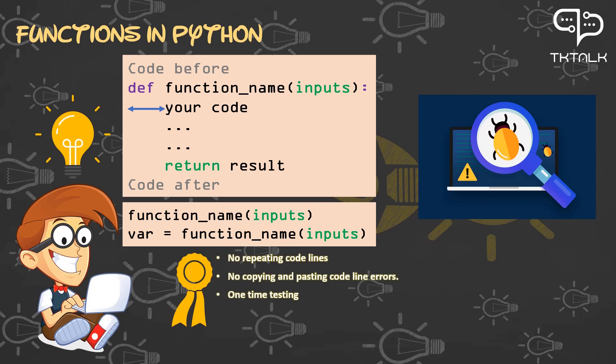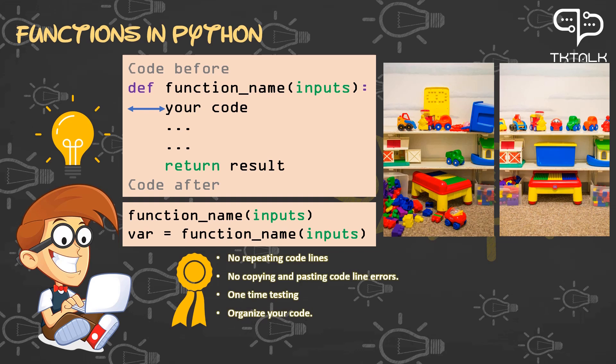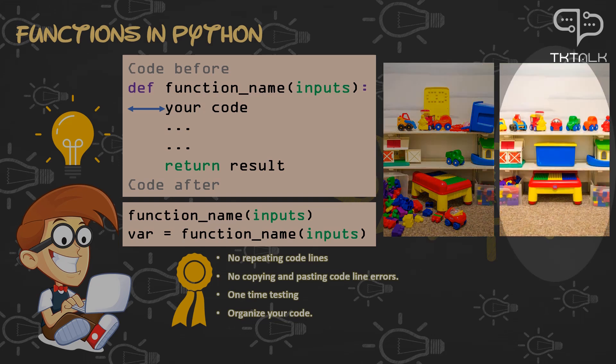Third, when you create a function and test it, you do not need to test it again every time you use it or call it. Fourth, organize your code. Functions break longer programs up to smaller components and that will make your code easier to find areas in your program and easier to read. This is just like the difference between those pictures of the toys. The picture on the left is messy, making it harder to find your toys, and the one on the right is organized where you can easily find your toys.